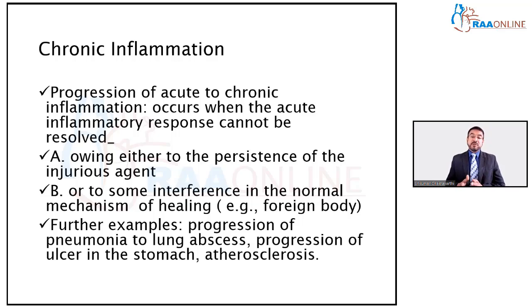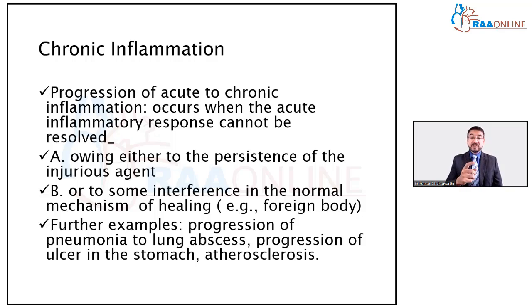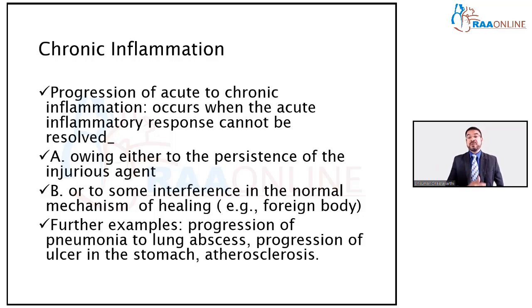When does an inflammation progress from acute to chronic? It occurs when the acute inflammatory response cannot be resolved. For example, the bacteria may be very resistant to the antibiotics the patient has taken, so the bacteria persists and the macrophage is unable to eliminate it. Or there may be a foreign body inside the body — a piece of glass, metal, or a prosthetic agent placed during surgery — that interferes with the mechanism of healing.